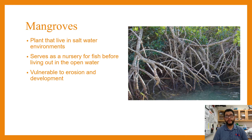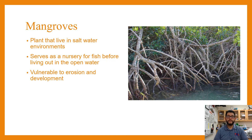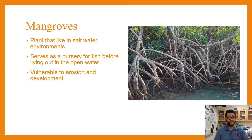Another important impact we have on wetlands is on mangroves. Mangroves are flowering plants that can grow in saltwater, which is important because very few plants actually do that. They tend to serve as a nursery for fish.